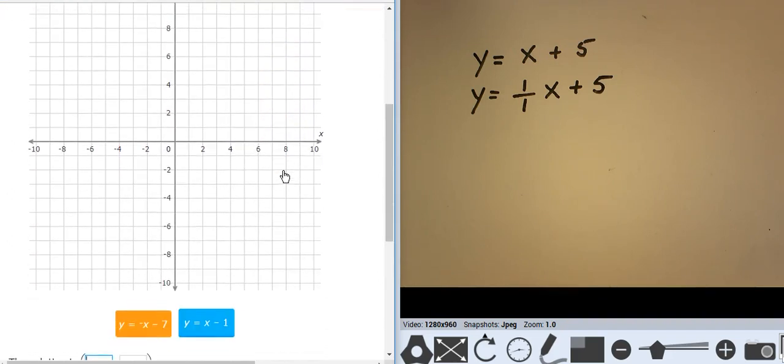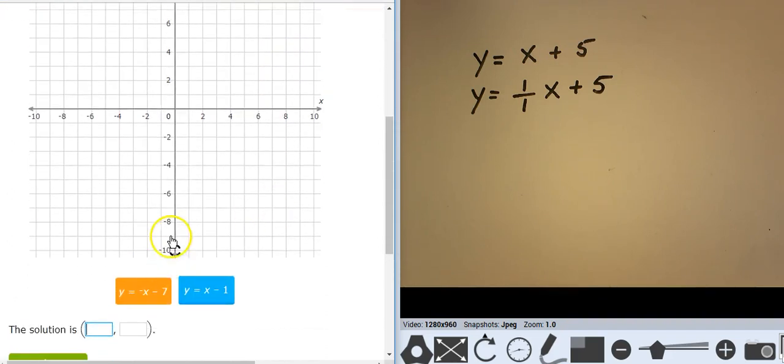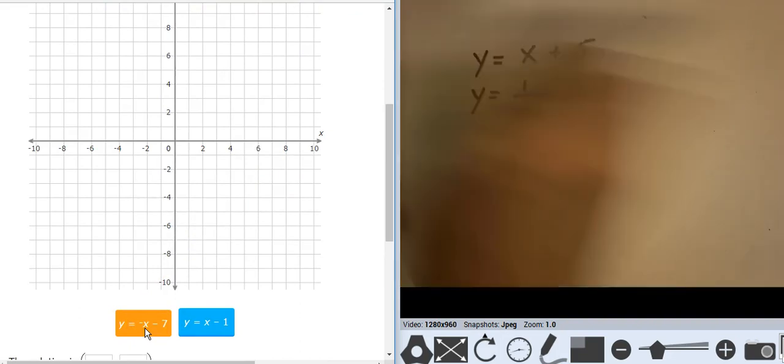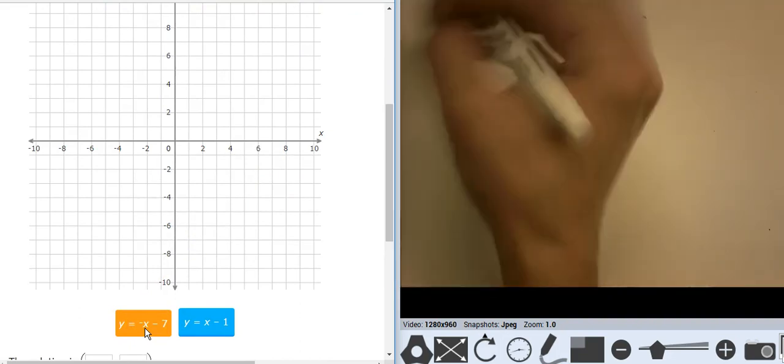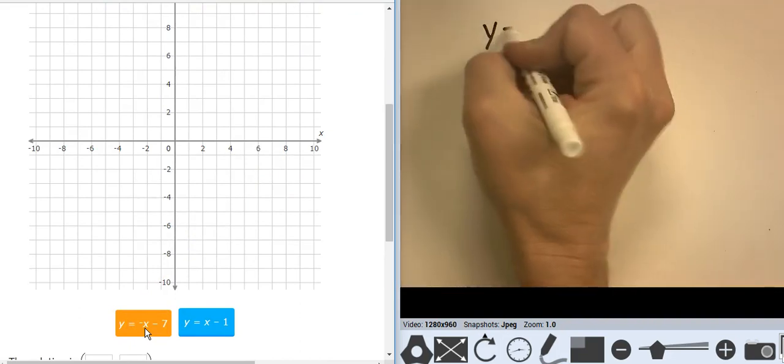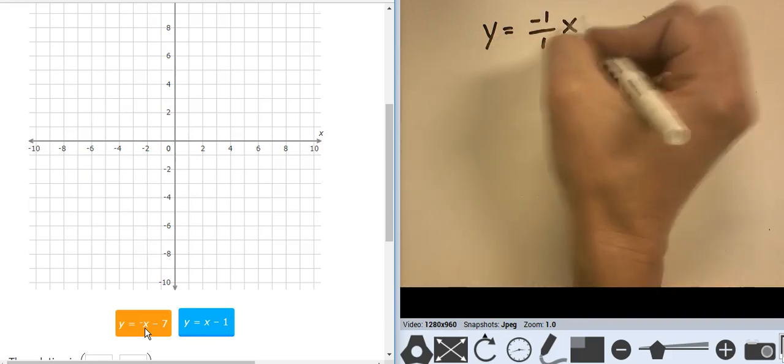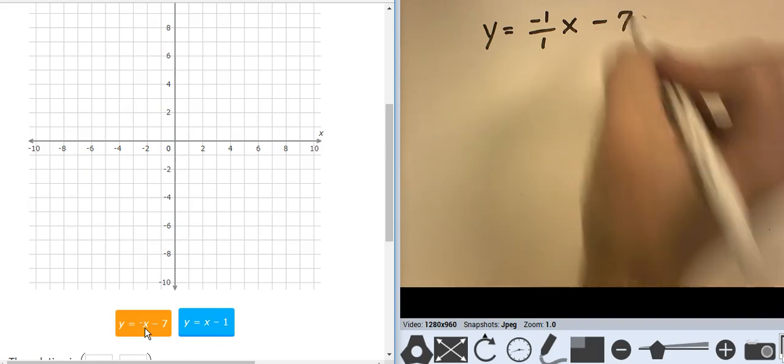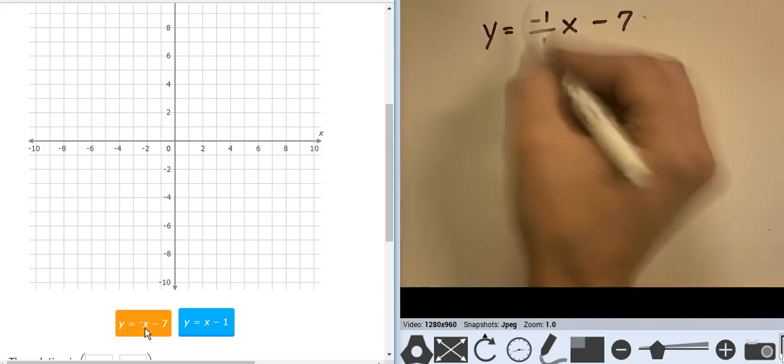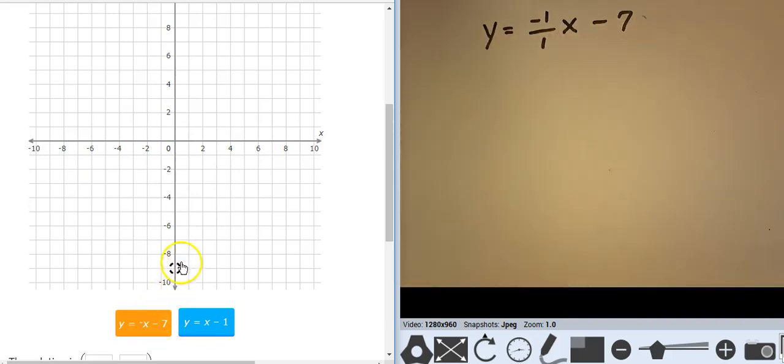Another one. Let's start with this orange one, and I'm going to give you a little bit of clarity on that so you can really see this equation. It's y equals negative 1 over 1x minus 7. That's the orange one. I've really shown that slope. So I'm going to start at negative 7 and go down 1 over 1.